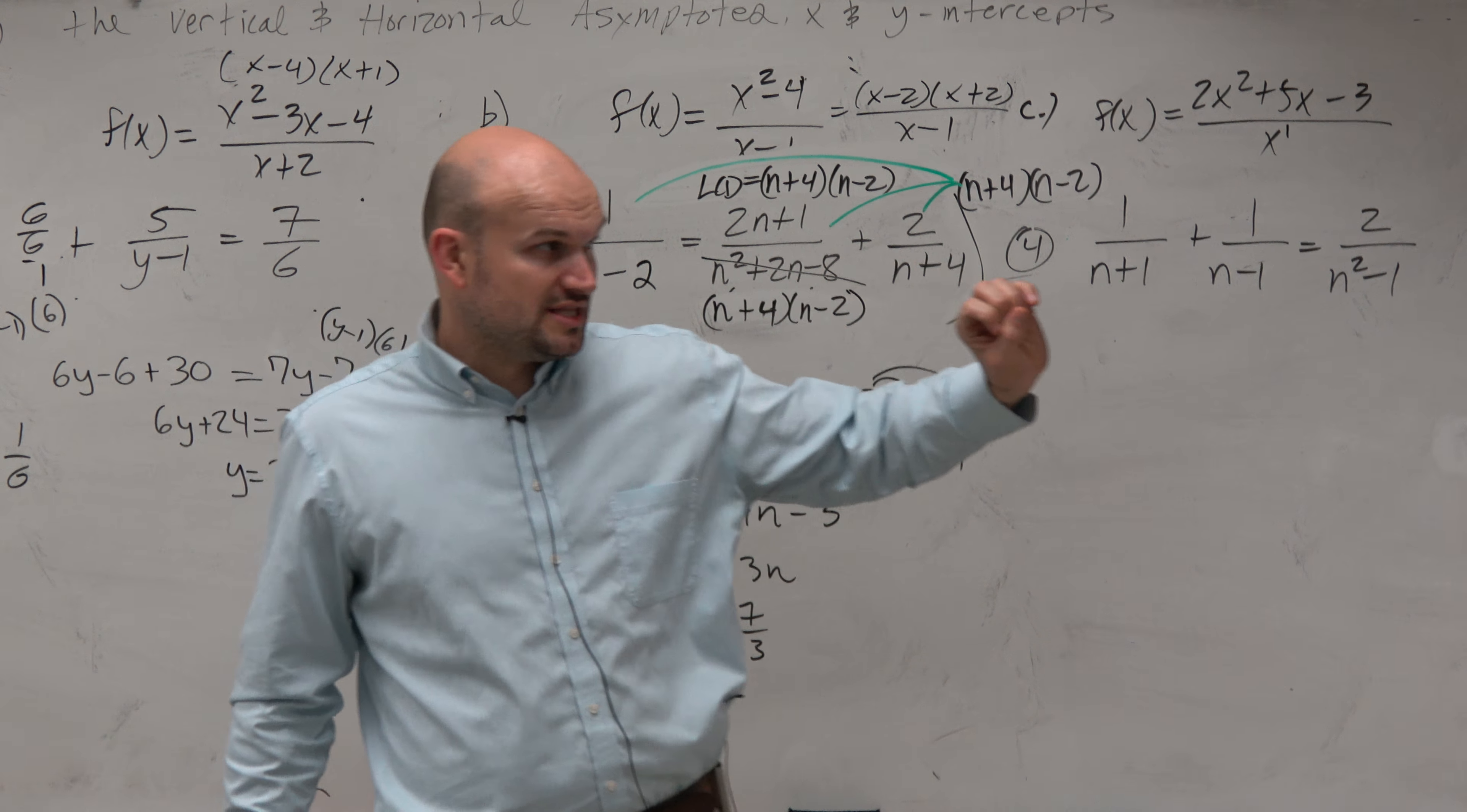So whenever you check the answers to a simplified equation, you've got to make sure you plug them back in to make sure that they don't make your denominator equal to 0. And you guys can see none of these make my denominator equal to 0. So there's solutions to both equations.